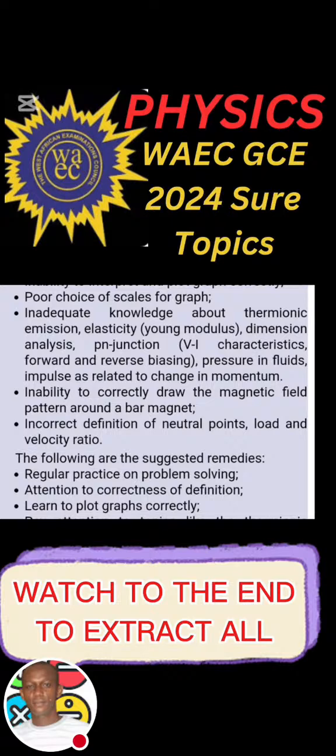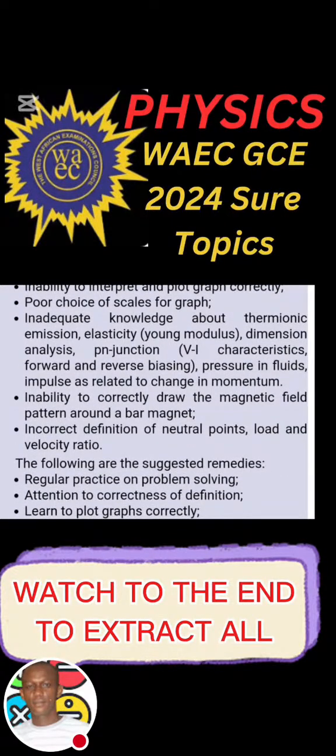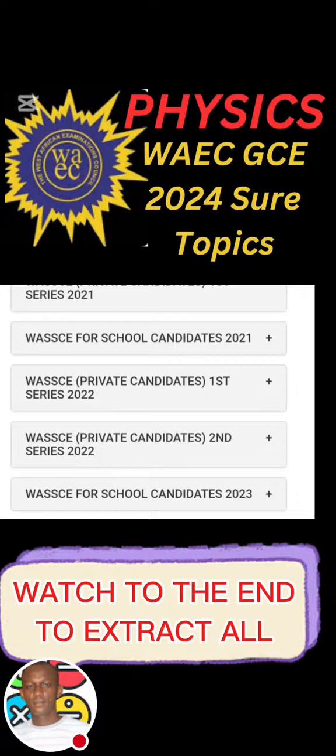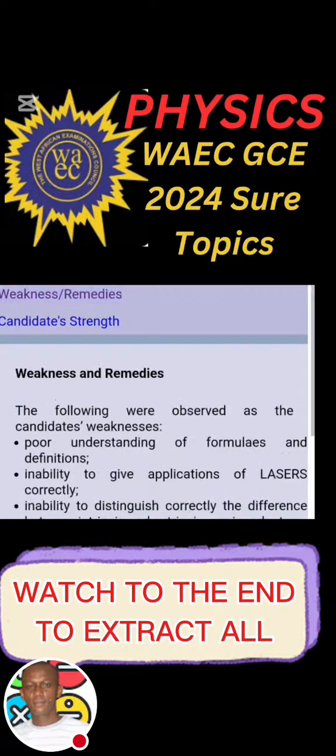Another one: inability to correctly draw the magnetic field pattern around the bar magnet, that's another thing. So you have to study magnetism, that's another topic. Incorrect definition of neutral point, load and velocity ratio, that's under work, energy and power, and machines. So we have to study that also. Let's go to another year. We checked the other time for the second series.